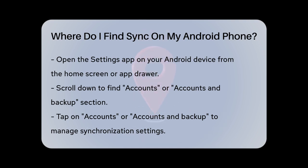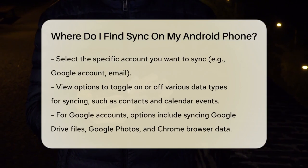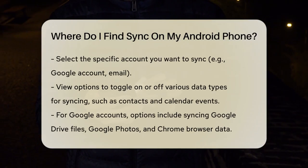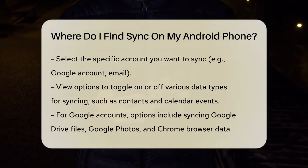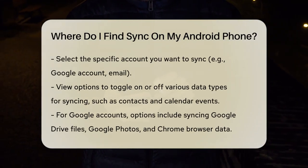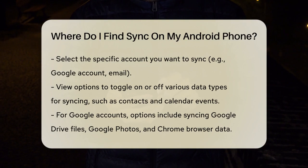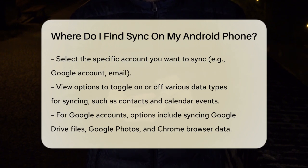Tap on Accounts or Accounts and Backup, and then select the account you want to sync, such as your Google account, email, or any other app that supports syncing. Here you'll see options to toggle on or off the different types of data you want to sync, like contacts, emails, calendar events, and more.